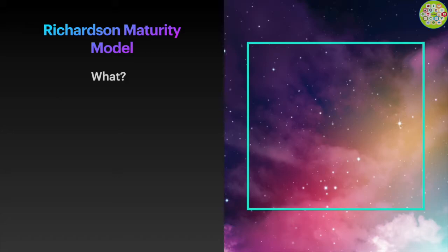The Richardson Maturity Model is a way to categorize or grade REST APIs. Basically, this model divides REST APIs or RESTful web services into four categories: level 0, level 1, level 2, and level 3.